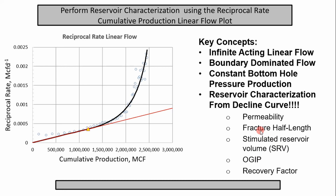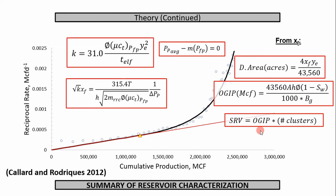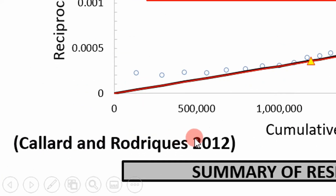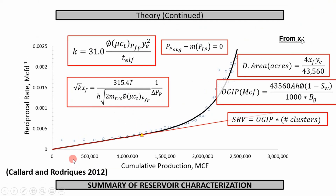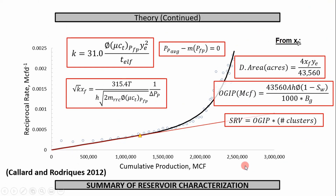And if you don't know what clusters are, we'll go into that in a little bit. The important equations in this analysis are shown here. These equations came from this resource by Callard and Rodriguez 2012, and that reference will be listed in the last slide. This is what allows us to perform reservoir characterization using the reciprocal rate cumulative production plot. I suggest you go read this if you're interested.